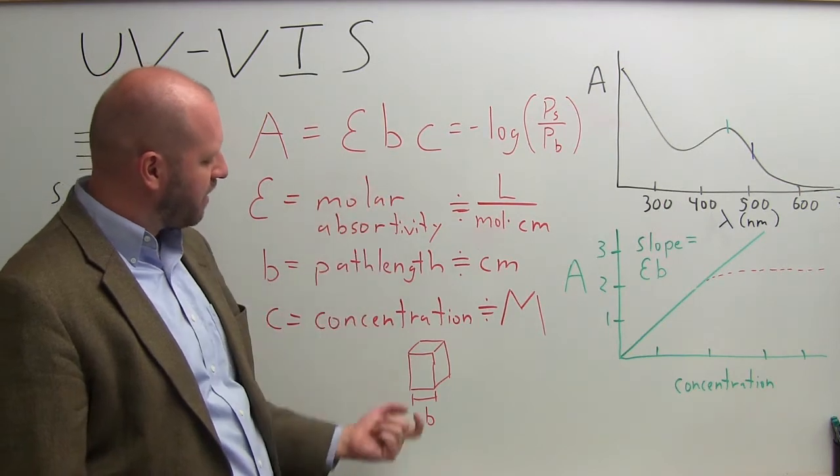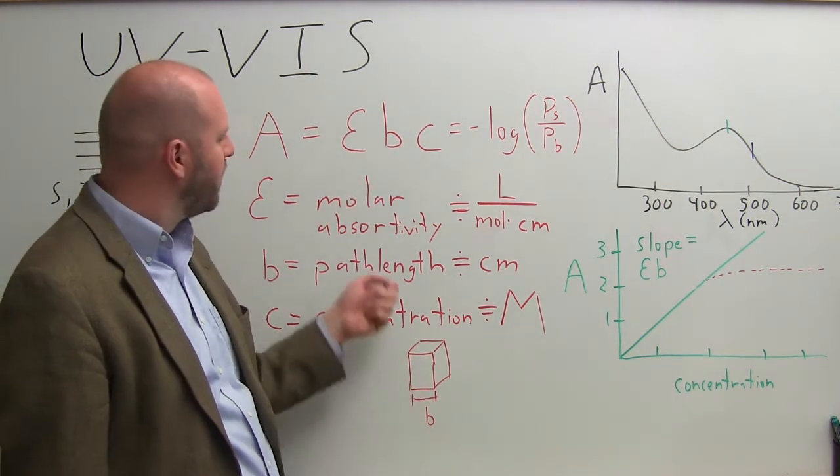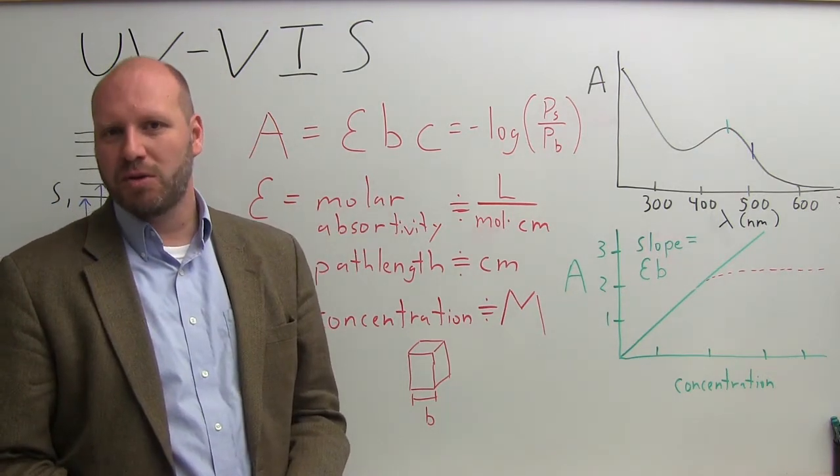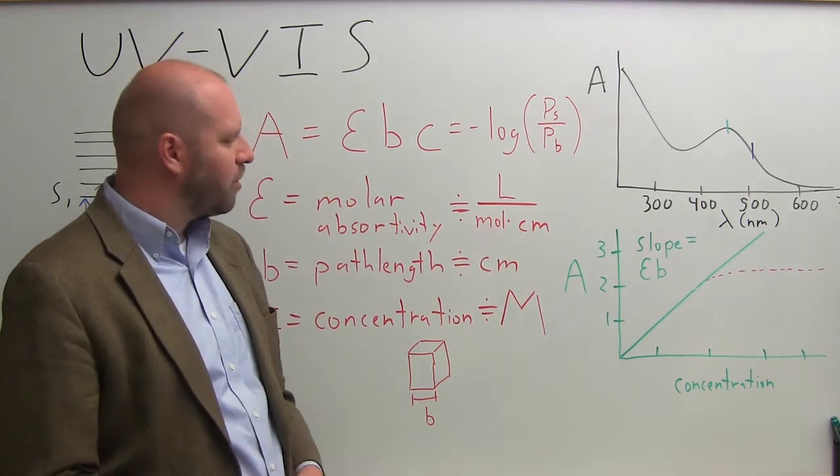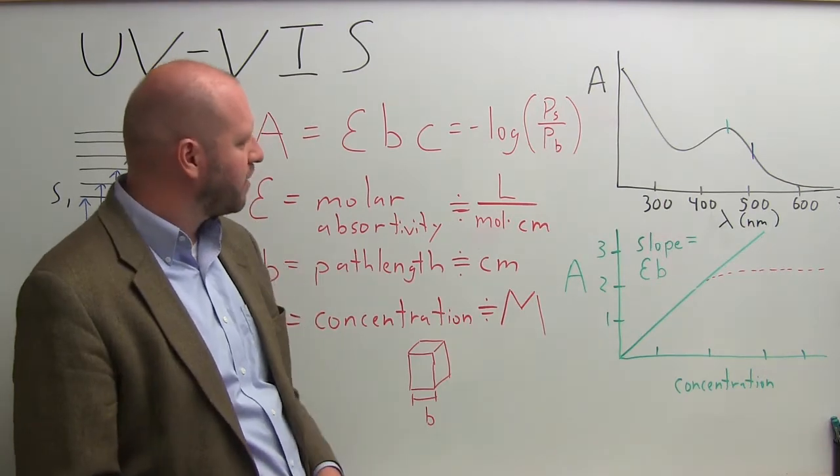B is the path length - in other words, the distance in the cuvette the light travels through. Epsilon is the molar absorptivity coefficient, which tells you the probability of your molecule absorbing that wavelength of light. Typical molar absorptivity coefficients range from zero to about 10^5 for a very strong absorbing molecule.